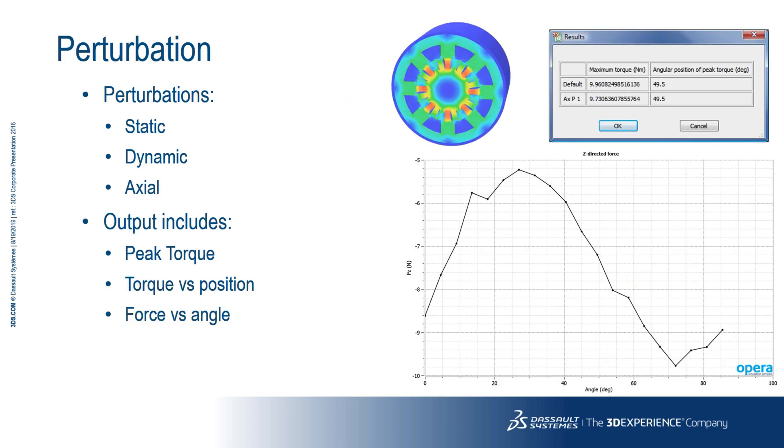The perturbation analysis is an extension to the torque v angle analysis for modelling various types of rotary centricity, described as perturbations. The eccentricity can be static or dynamic radial or axial in 3D. The output includes the value of peak torque, its mechanical angular position and the torque versus position curve, but also the addition of the forces versus angle.